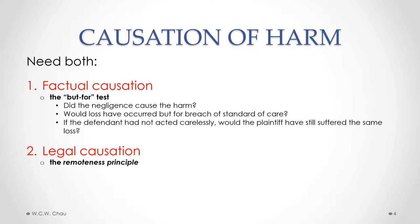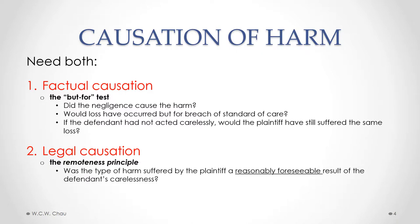Legal causation applies what we call the remoteness principle. The remoteness principle asks: was the type of harm suffered by the plaintiff a reasonably foreseeable result of the defendant's carelessness? This rule is intended to eliminate injuries or losses that are still factually connected — there is factual causation connecting the two — but the harm is just seen to be too far-fetched. It's too remote.